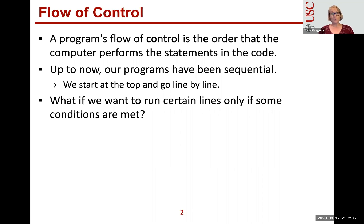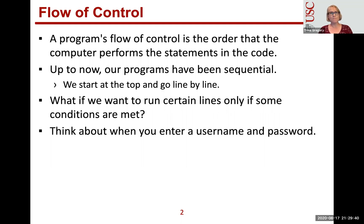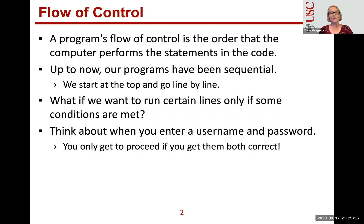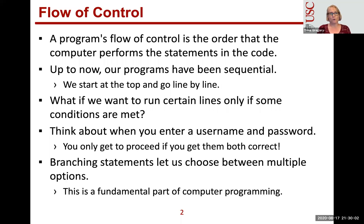Up until now, we've written code where the computer just goes line by line, executing or interpreting those lines of code — the Python interpreter interprets those lines of code. But now, what if we only want to run certain code if some conditions are met? You could think of that as a username and password. We only want to give access if the username matches the password we've saved, so we only want to proceed if both are correct. We need to change the flow of control.